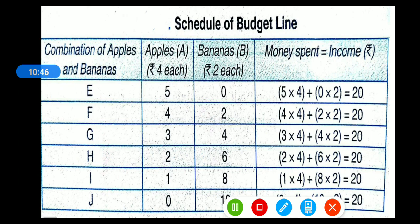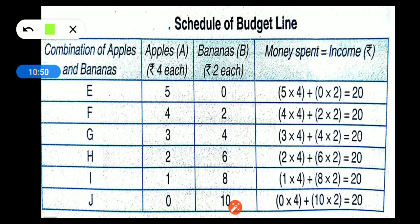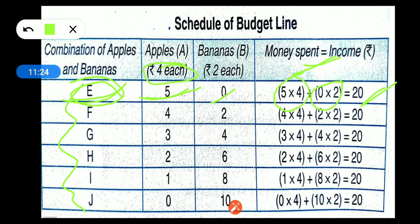This gives us the budget set with combinations E, F, G, H, I, J. Combination E: 5 apples, 0 bananas — 5 × 4 = 20 rupees. Combination F: 4 apples and 2 bananas — 4 × 4 + 2 × 2 = 16 + 4 = 20 rupees. Combination G: 3 apples and 4 bananas — 3 × 4 + 4 × 2 = 12 + 8 = 20 rupees.